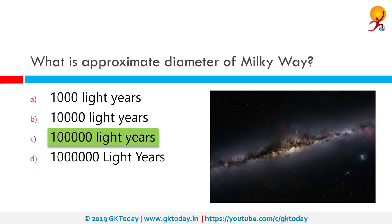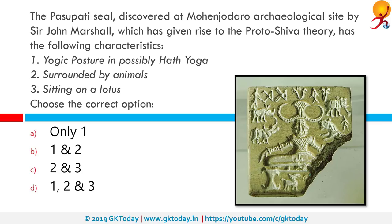The Pashupati seal discovered at Mohenjo-daro by Sir John Marshall gave rise to the proto-Shiva theory. Its characteristics: 1. Yogic posture possible (Hatha yoga). 2. Surrounded by animals. 3. Sitting on a lotus. The correct options are 1 and 2. The figure is not sitting on a lotus, but is surrounded by animals and sitting in a yogic posture — often called the Lotus posture — so 1 and 2 are correct.